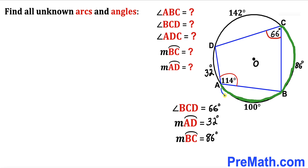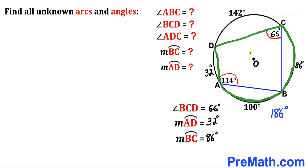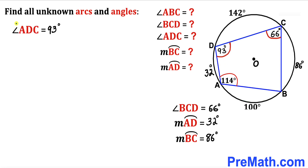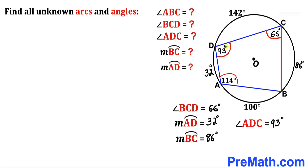Now let's focus on the big arc. The measurement of arc ABC is 100 plus 86, giving us 186 degrees. This arc subtends angle ADC at the circumference, so angle ADC is half of 186 degrees, which is 93 degrees. Therefore angle ADC turns out to be 93 degrees.